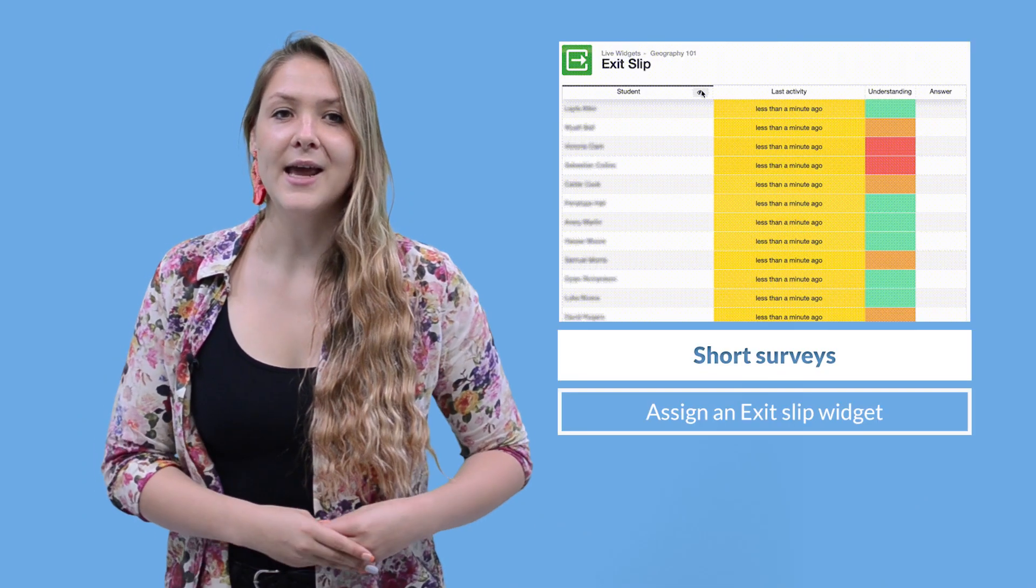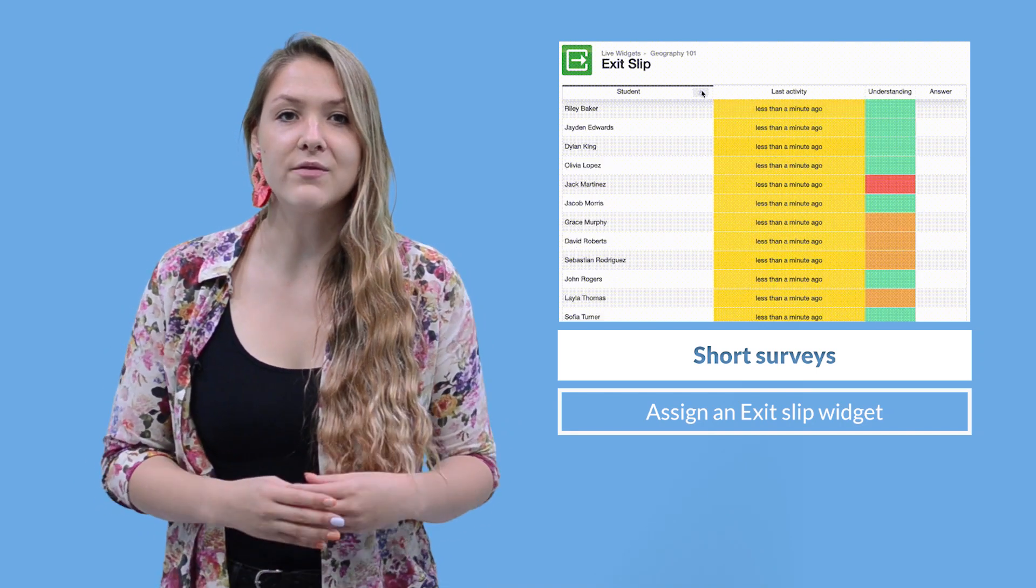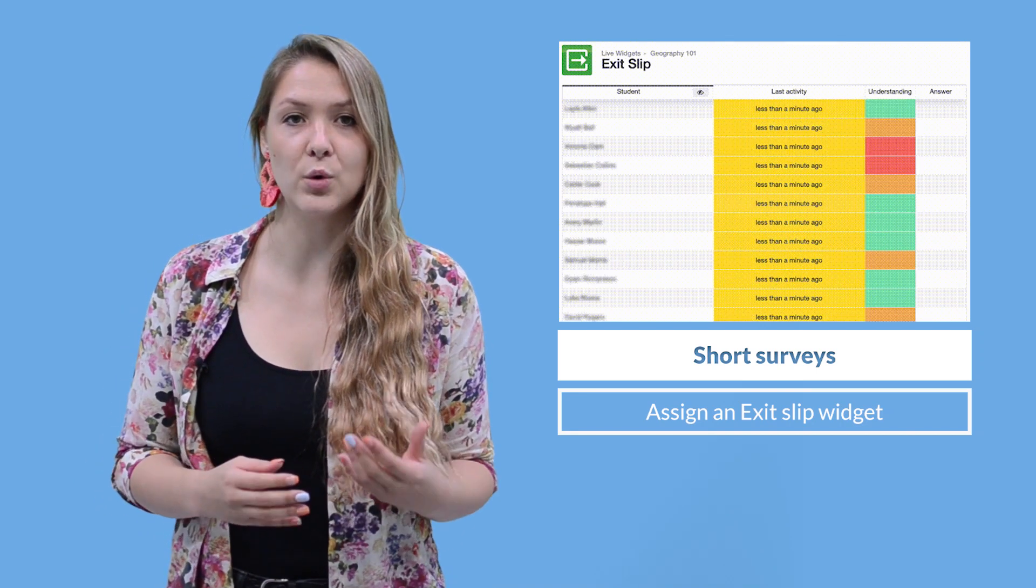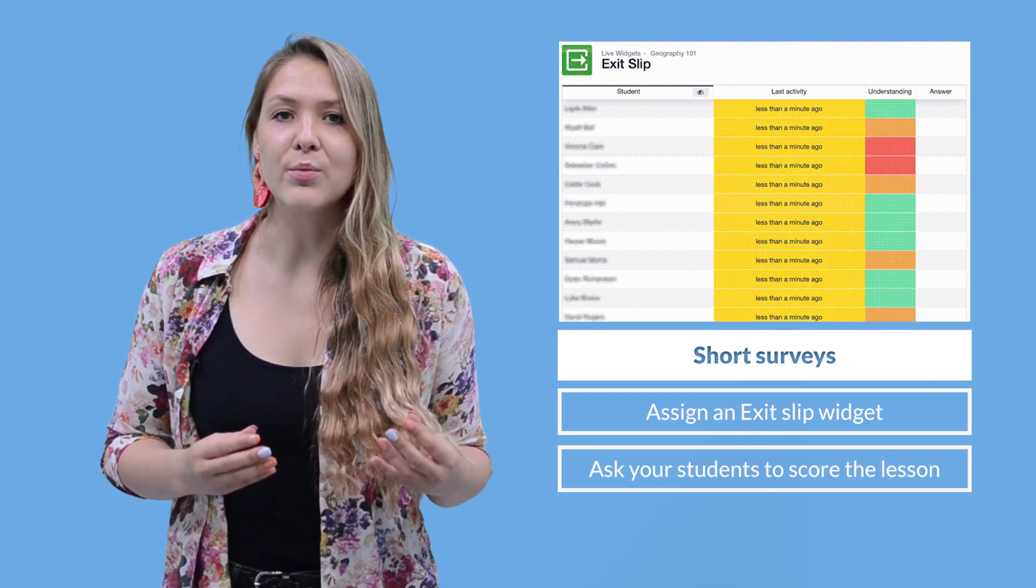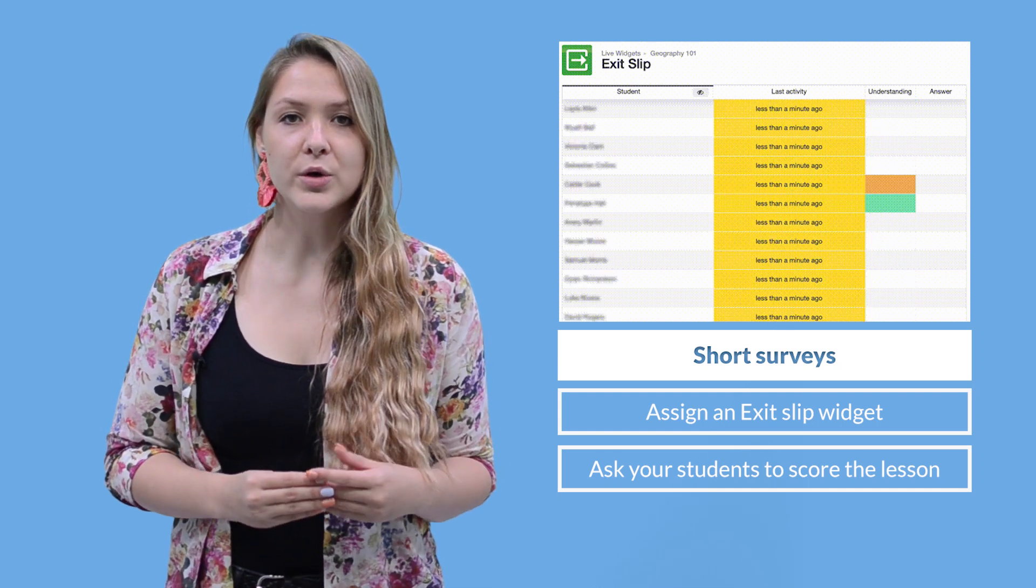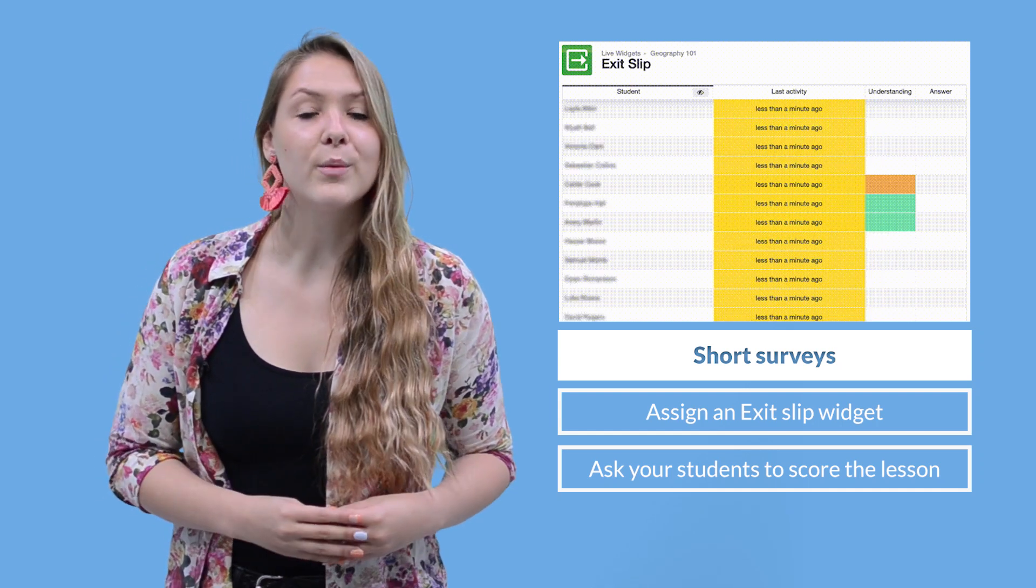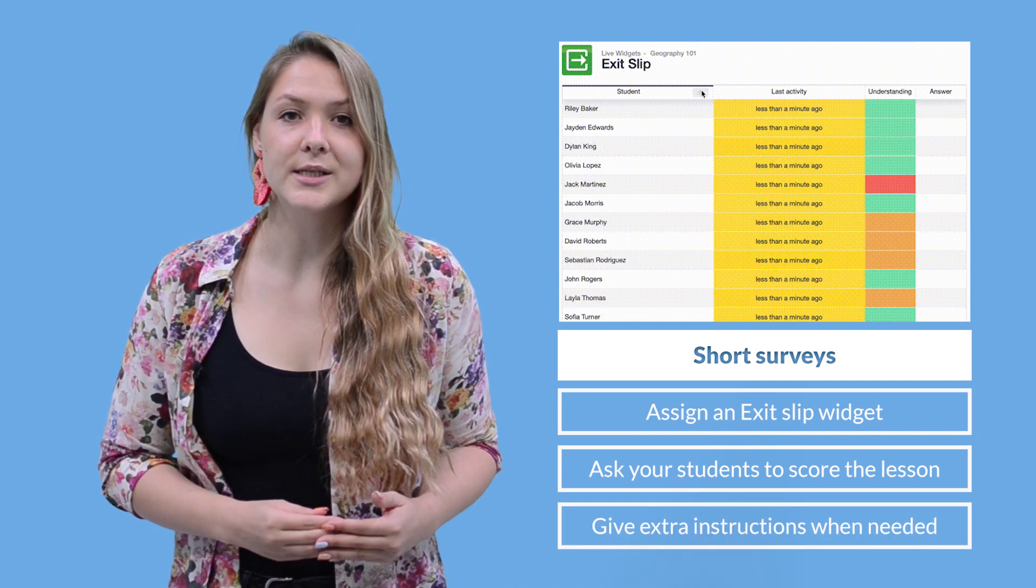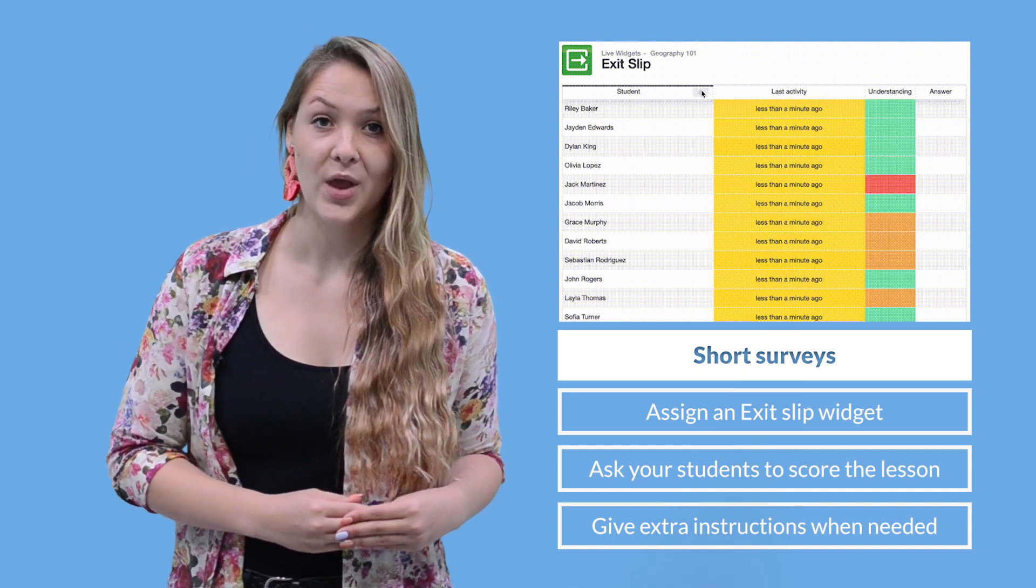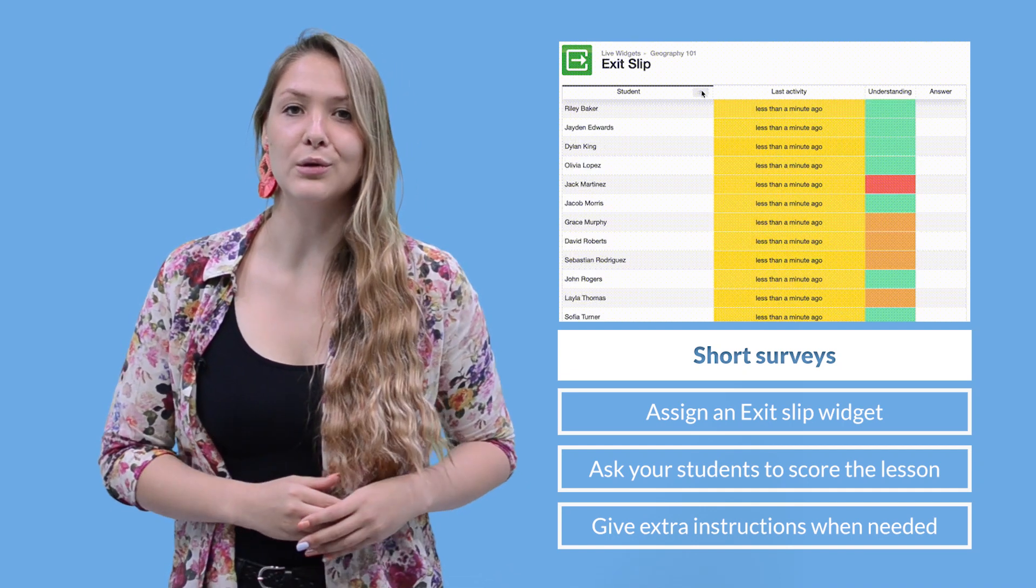Lesson idea number four, short anonymous surveys. Assign an exit slip widget in Google Classroom to quickly evaluate how students understand your lesson by asking them to score with a smiley face. By looking at the results, you can get an impression on how well your class processed the lesson. Before building upon previous knowledge in the next lesson, you give extra instructions to your students that responded with a sad face so you can make sure that they can continue learning. You can also pair up students that answered with a happy face with students that felt neutral so they can help each other out.